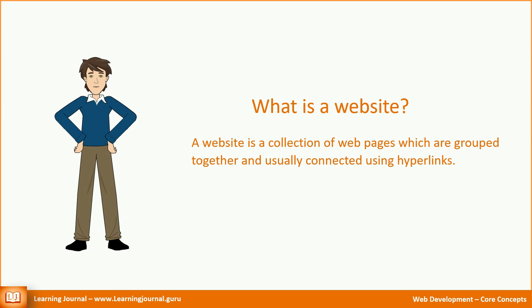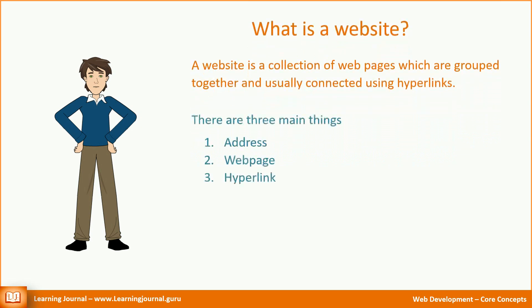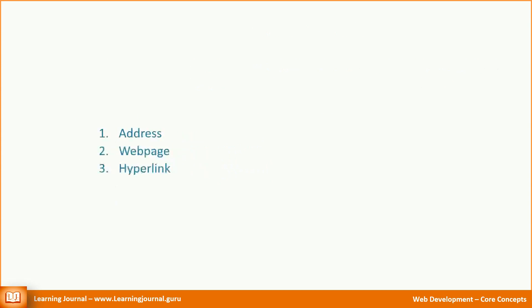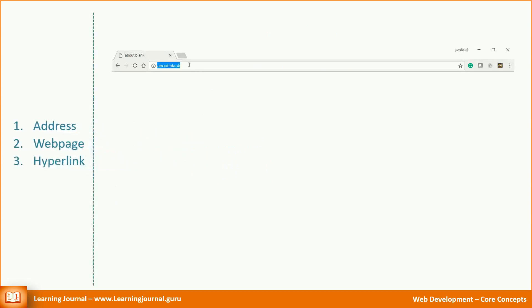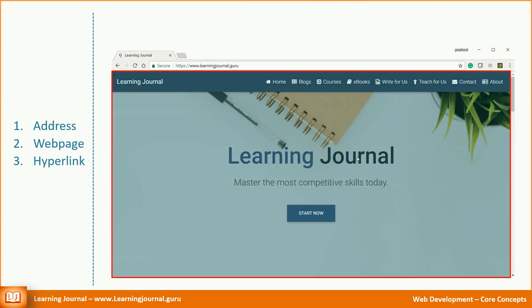Let's try to understand that. There are three things: address, web page, and hyperlinks. To open any website, you must know its address. Start your browser and type an address. Whatever you see in your browser, it is a web page.